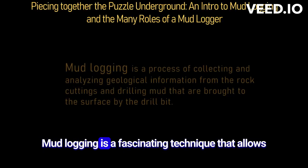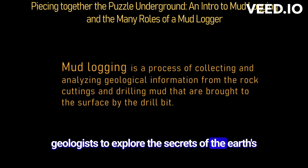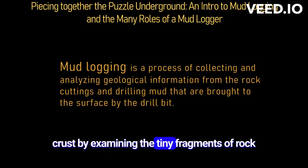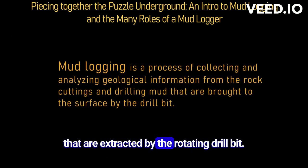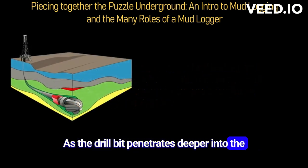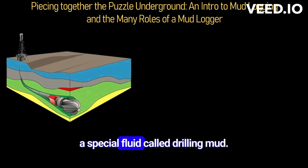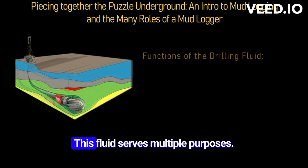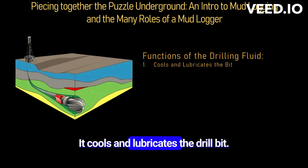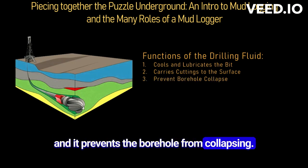Mud logging is a fascinating technique that allows geologists to explore the secrets of the Earth's crust by examining the tiny fragments of rock extracted by the rotating drill bit. As the drill bit penetrates deeper into the ground, it creates a borehole filled with a special fluid called drilling mud, which cools and lubricates the drill bit, carries the rock cuttings to the surface, and prevents the borehole from collapsing.